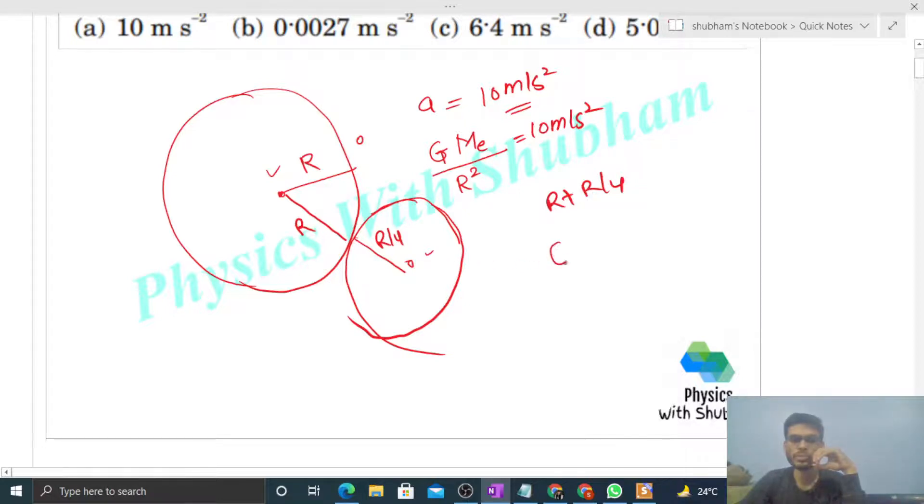So what is the force, gravitational force of attraction exerted by Earth on the moon? That will be capital G mass of the Earth mass of the moon divided by distance between the two centers squared. So R plus R by 4, its square. So this is the gravitational force exerted by the Earth on the moon.